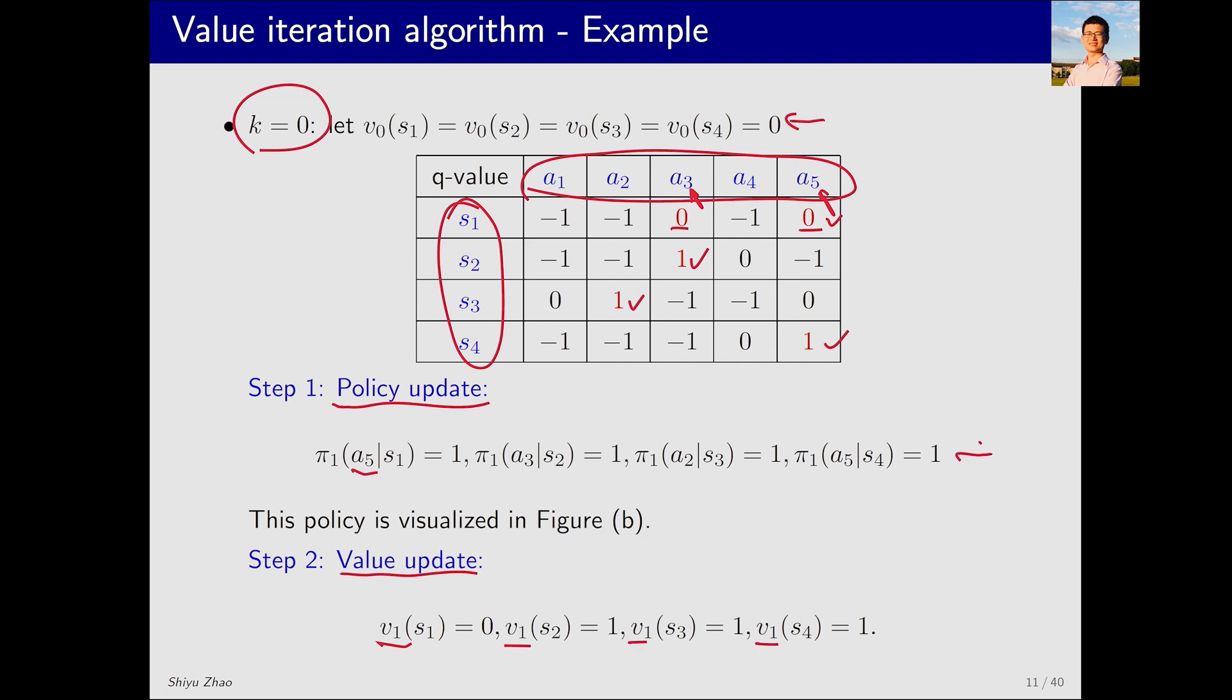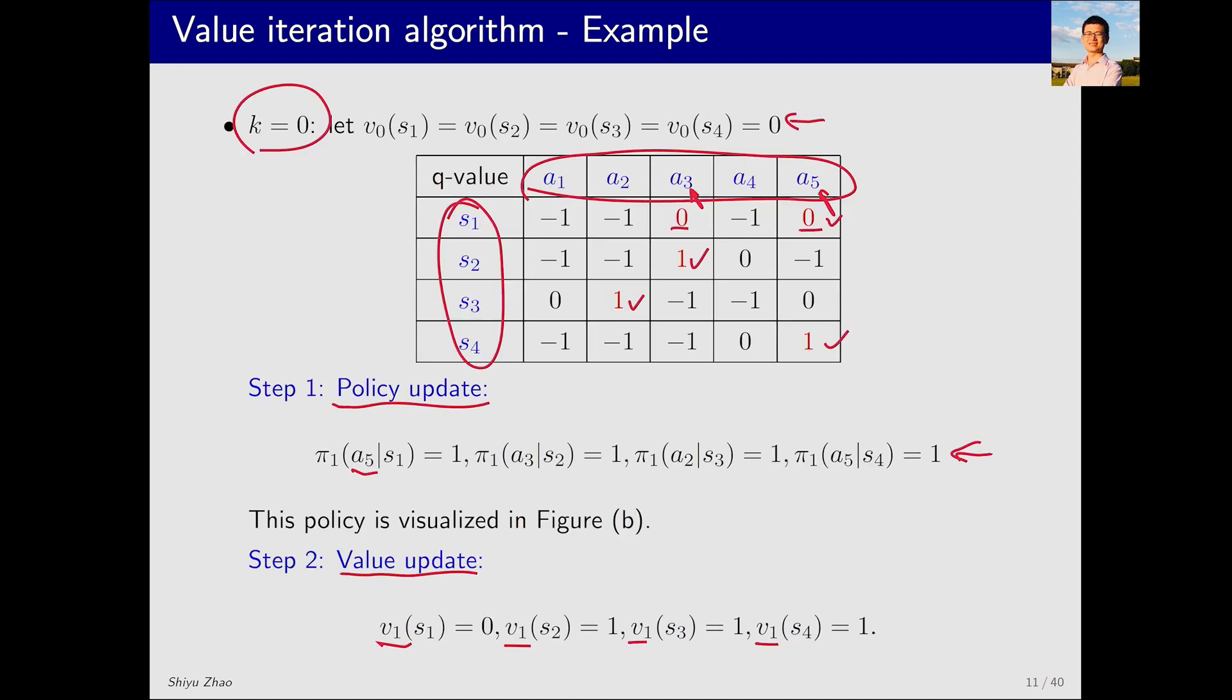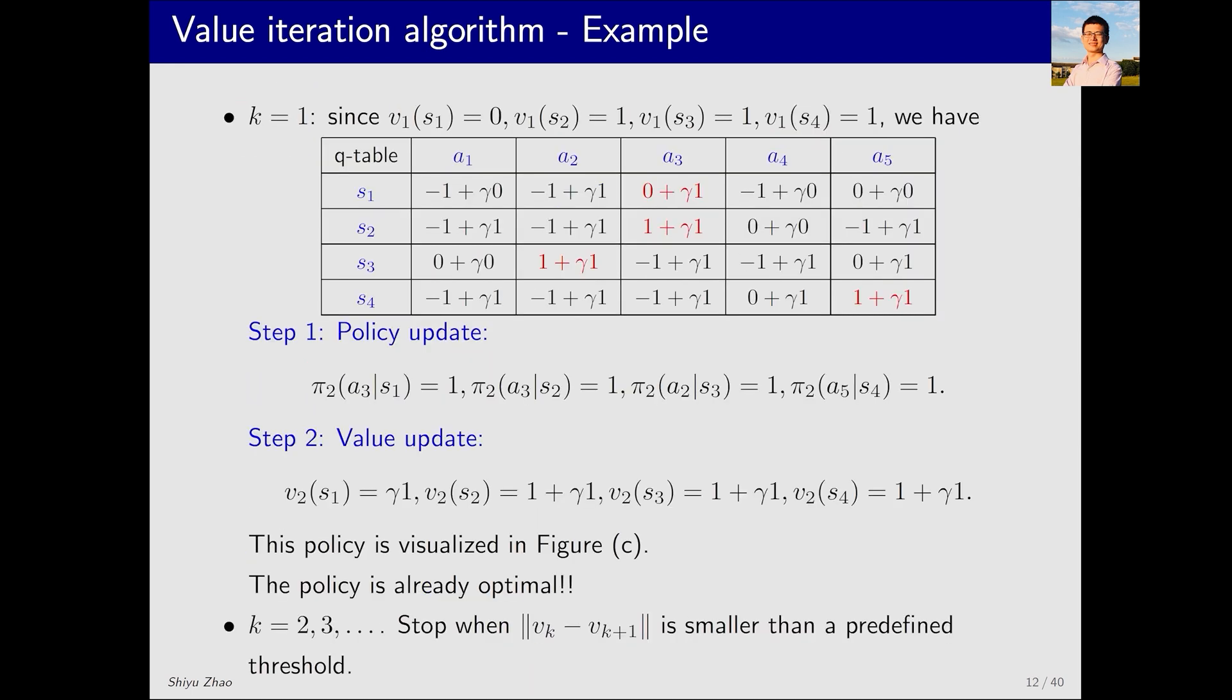We can visualize this policy. Turning back to the previous slide, we see the policy can be plotted like this. In states s_2, s_3, and s_4, the optimal policy has already been reached, as we already know what the optimal policy looks like. However, in state s_1, it is not the optimal policy. It remains to stay still by the present policy, but the optimal policy is to move downward. Don't worry. Next, we can do more iterations to generate the optimal policy.